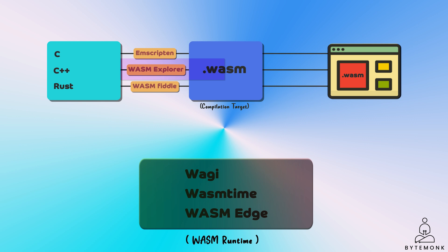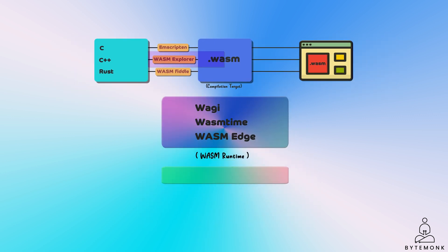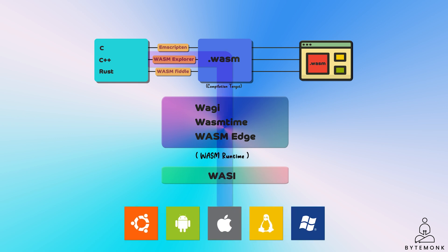The Wasm System Interface, or WASI, provides a way for the Wasm runtime to interact with the host operating system and access resources securely. The Wasm binary then runs inside the WebAssembly runtime, which handles execution according to the current OS and processor. This means you can run the same Wasm application on different operating systems, regardless of whether they use Intel or ARM processors.